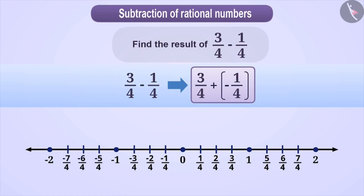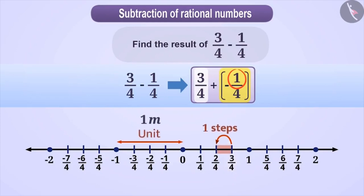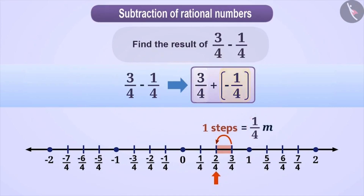The first number is 3/4, so we find its position on the number line. The second number is minus 1/4, which is a negative rational number. So based on the numerator of the second number, we move that many steps to the left of 3/4. The numerator is 1, so we move 1 step, which equals 1/4 unit distance. Therefore, we arrive at 2/4, which is the result of 3/4 plus minus 1/4.